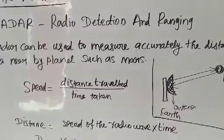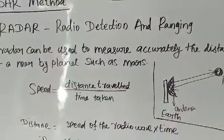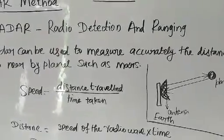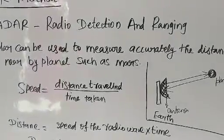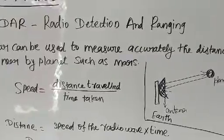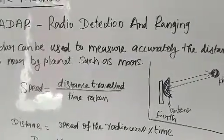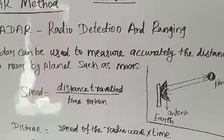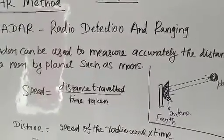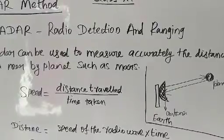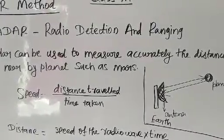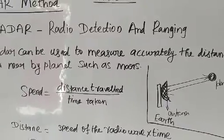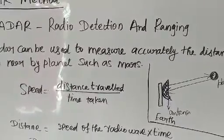The antenna is placed on the earth and transmits radio waves. These radio waves hit the nearby planet. After reflection, the radio waves are received by the antenna placed on the earth.